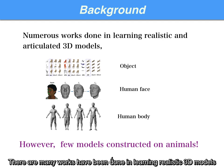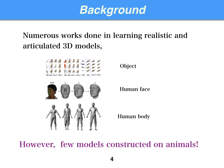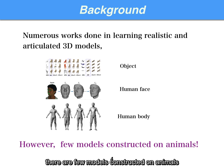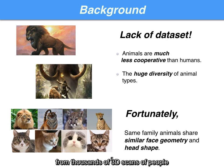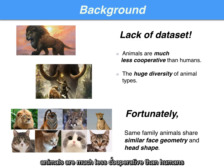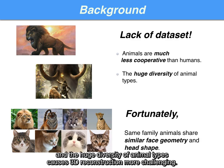There are many works that have been done in learning realistic 3D models. The task has achieved good results in the human face and body. On the other hand, there are few models constructed on animals. The main reason is that the best human models are learned from thousands of 3D scans of people in specific poses and expressions. The fact that animals are much less cooperative than humans leads to a lack of 3D scans — they don't listen to instructions from people.